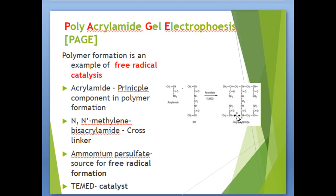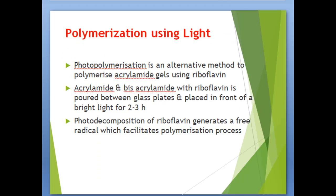The sulfate free radical formed in this process will help in the formation of polyacrylamide. Photo-polymerization is an alternative method to polymerize acrylamide gel using riboflavin. Acrylamide and bisacrylamide with riboflavin are poured between glass plates and placed in front of bright light for two to three hours. Photo-decomposition of riboflavin generates a free radical which facilitates the polymerization process.